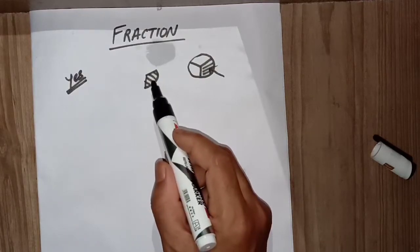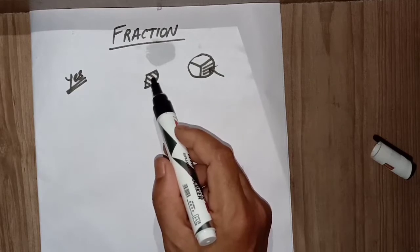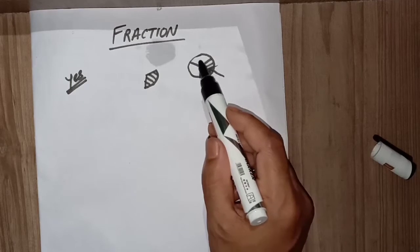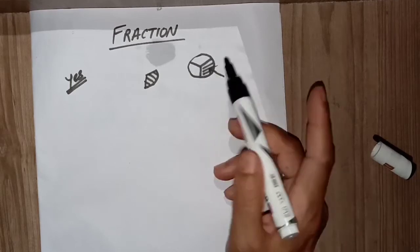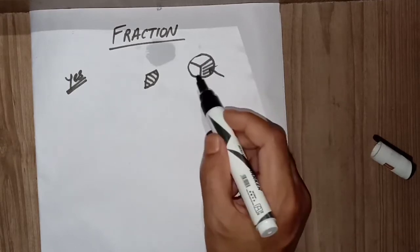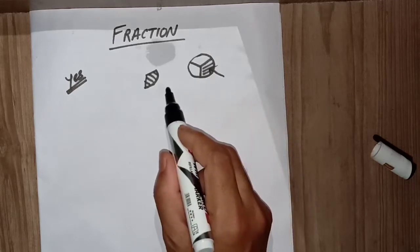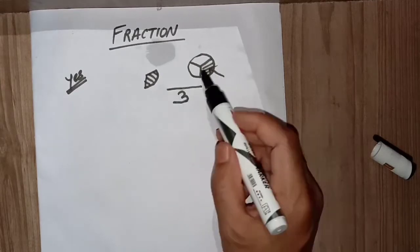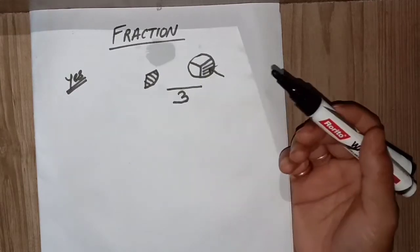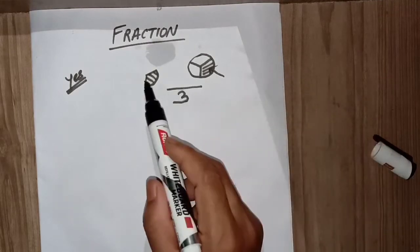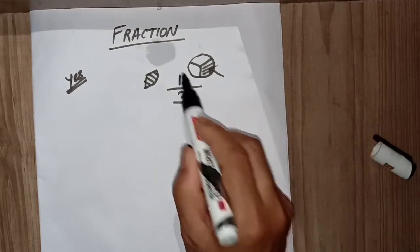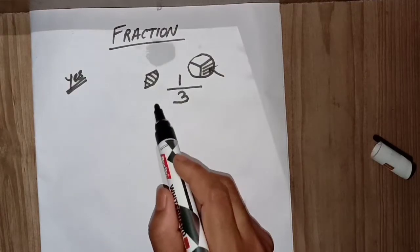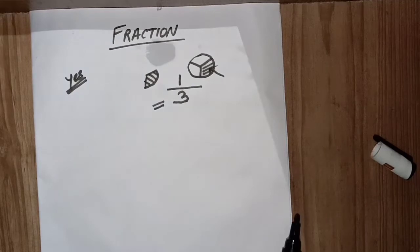This smaller part has been taken from the bigger circle, and the bigger circle was first split into three parts. So the entire circle has been split into three parts. After splitting into three parts, I am considering only one part — so one part of the total three parts. This is how we represent the fraction one by three.